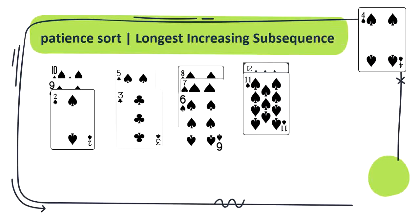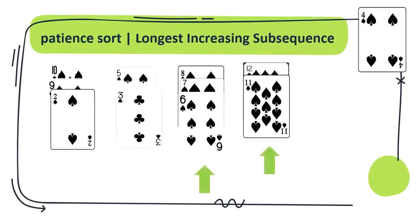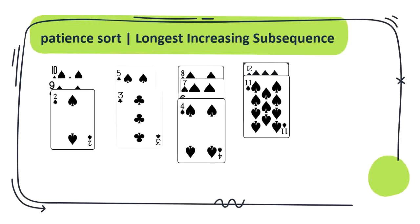Place 11 on 12. Here comes our last card 4. We have 2 piles that have higher value than 4, but patience sort is greedy so it always chooses the leftmost pile with the higher value, so place it on 6.